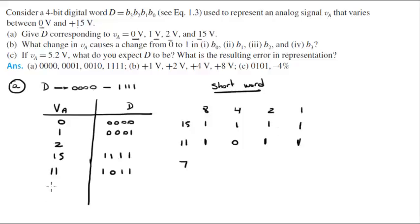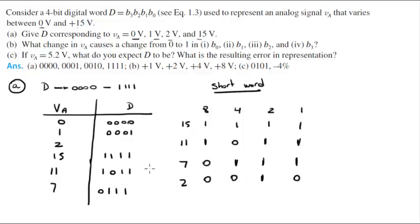Let me do one more number to reinforce this idea. For 7: 8 is over so 0, 4 yes, plus 2 is 6, plus 1 is 7. So 0,1,1,1 is 7. And for 2: 8 is over, 4 is over, 2 is right on the money — so it's 0,0,1,0. This quick technique only works when you have a short word.